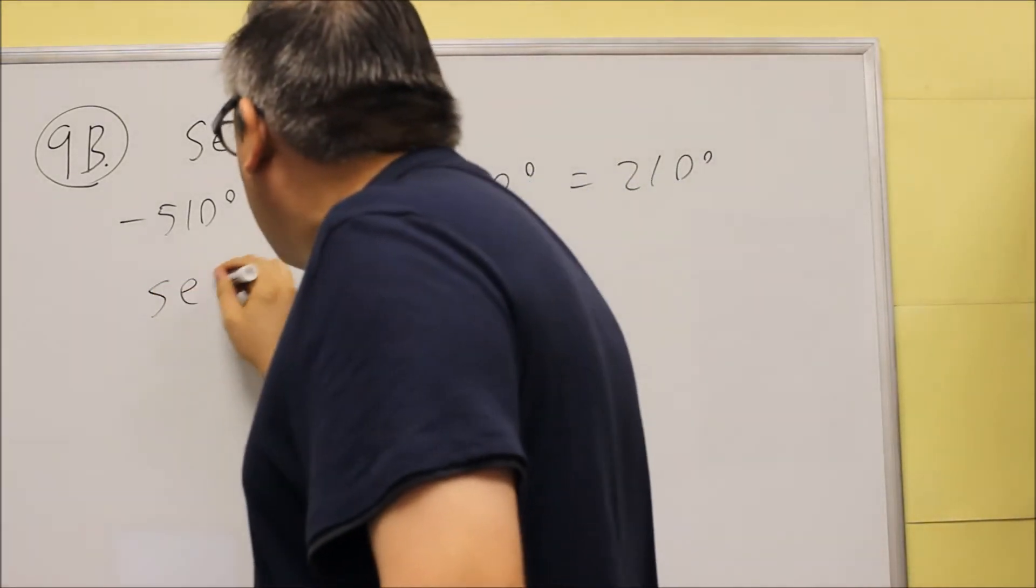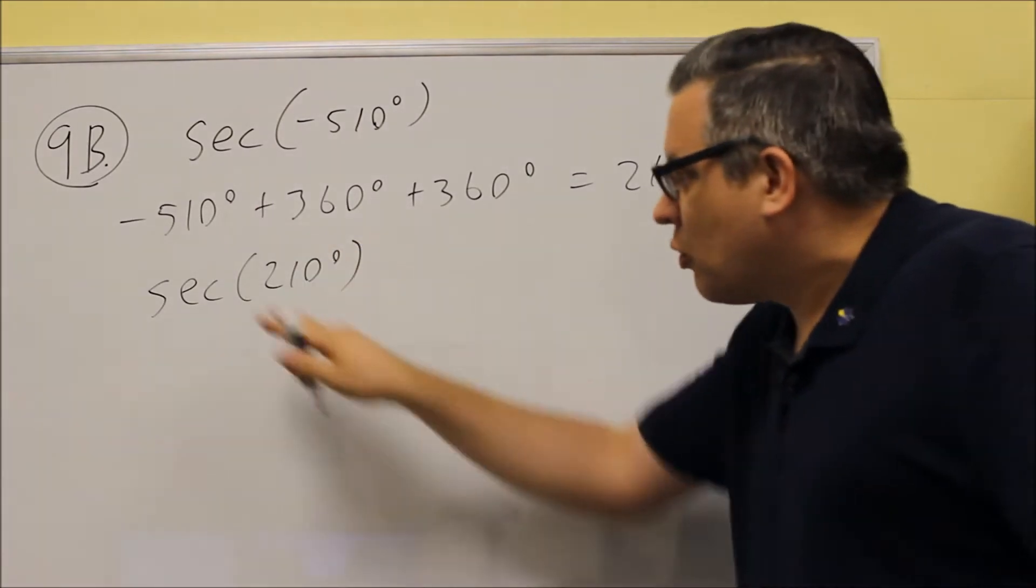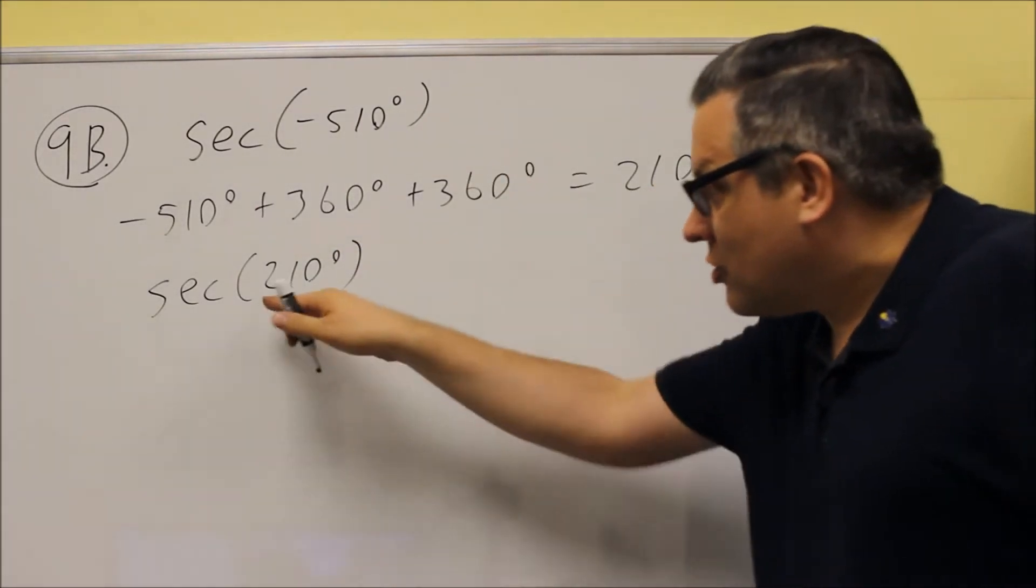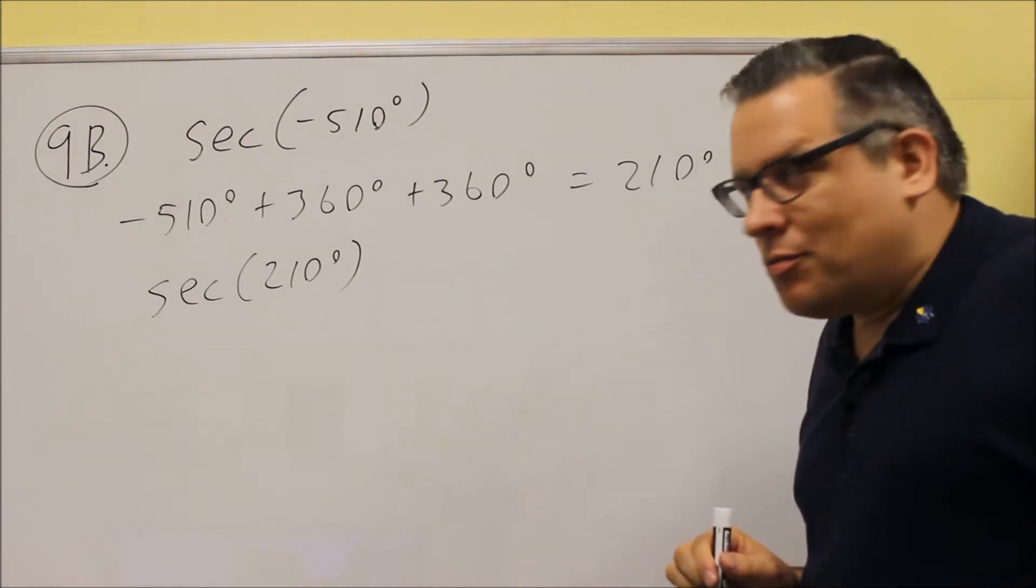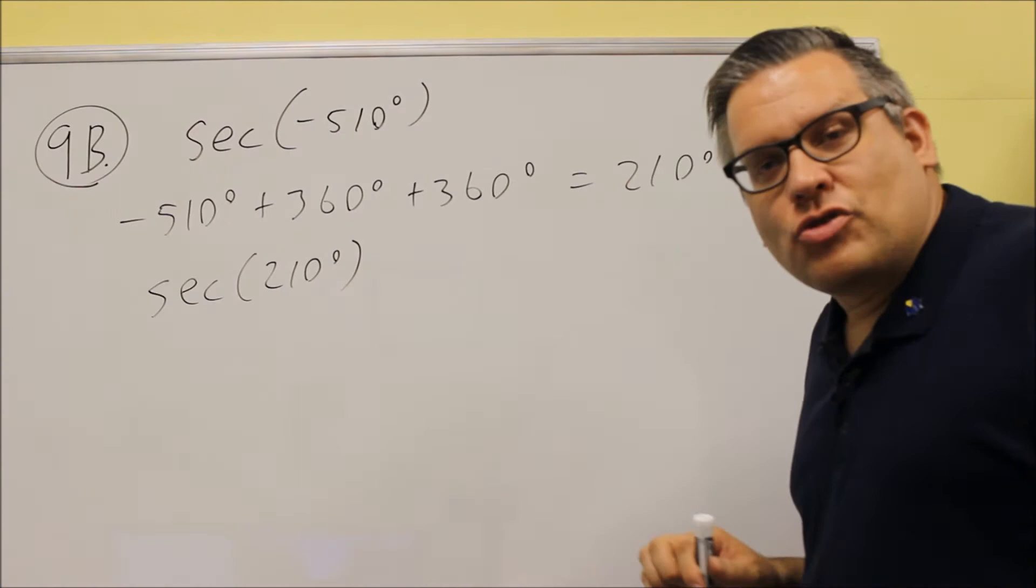So now the problem becomes secant 210, and this is what we're going to work with now for the rest of the problem. We want to get it out of the negative angle and turn it into a positive angle. So first thing we're going to do is find the reference angle for 210 degrees.